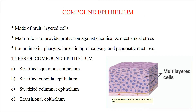Compound epithelium is made up of multilayered cells. Their main role is to provide protection against chemical and mechanical stress. They are found in the skin, pharynx, and inner lining of salivary and pancreatic ducts.